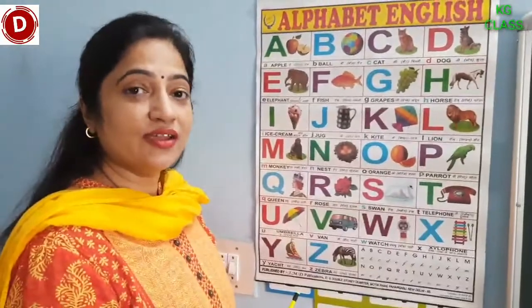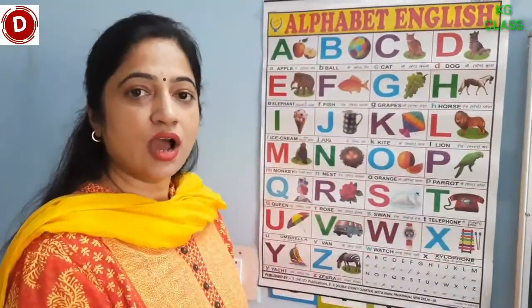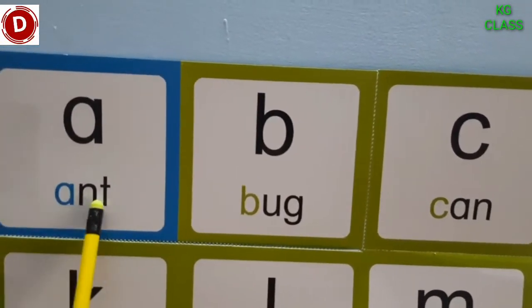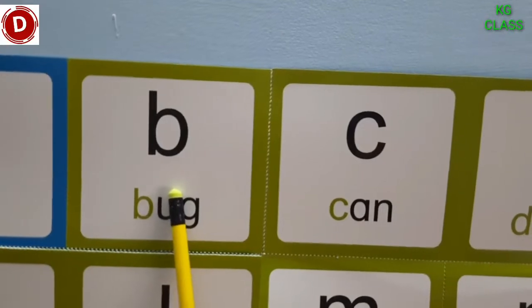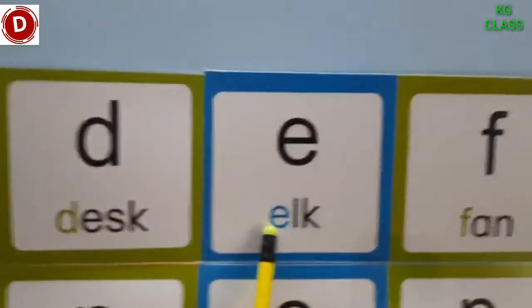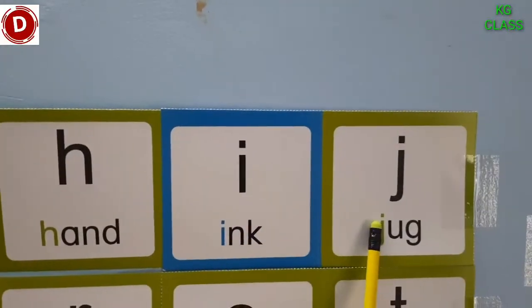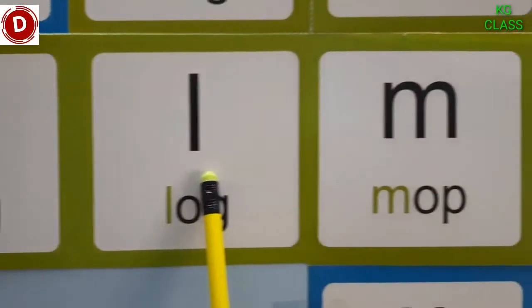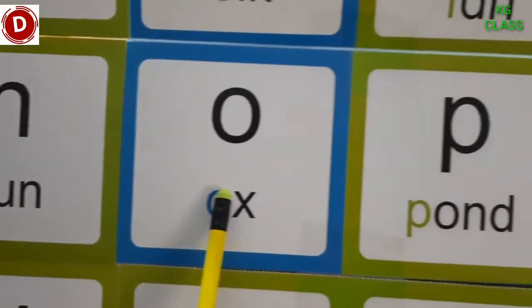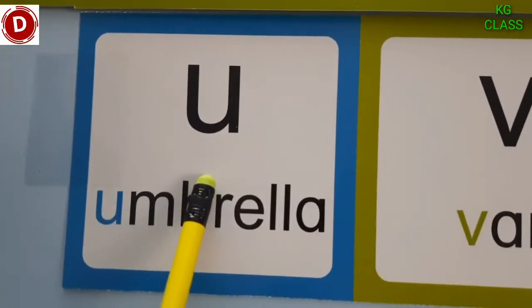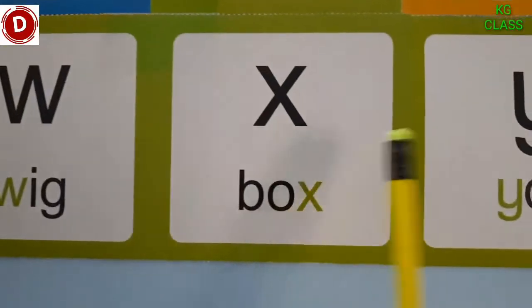We have revised reading of capital alphabet A to Z. Now we will learn small letters A to Z. This is small a, small b, small c, small d, small e, small f. You also speak with me. Small g, small h, small i, small j. Now comes small k, small l, small m, small n, small o, small p, small q, small r, small s, small t, small u, small v, small w, small x, small y, and small z. I hope now you are able to recognize capital and small letters A to Z.